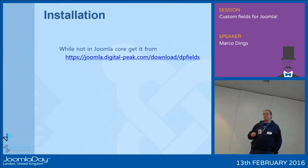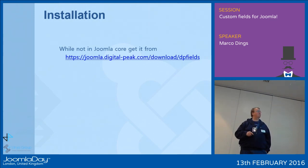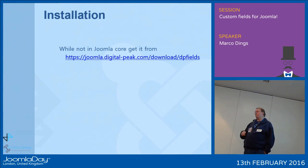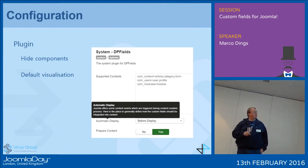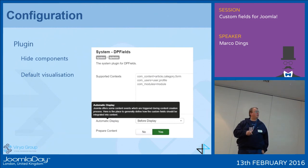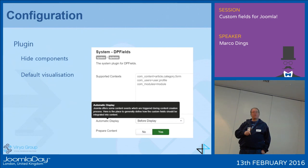As for the installation, it's very basic. While it's not in the Joomla core yet, just get it from joomla.digitalpeak.com and download DP Fields. It's a basic system plugin plus another plugin, so it should be relatively easy to install. What you then get is a number of options you should be aware of. Here you see the supported contexts — we have support for basic contexts: articles, categories, forms, users, and modules.